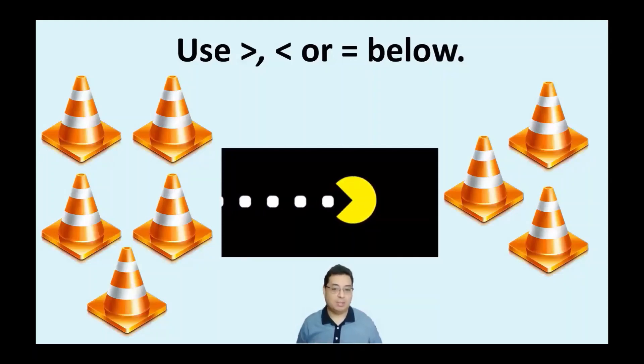And the way I was told is that Pac-Man always wants to eat more or the greater amount that he has to choose from. So he's always going to go in that direction here. So what you can say is that five is greater than three here.